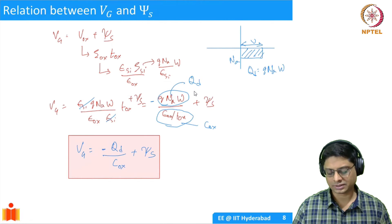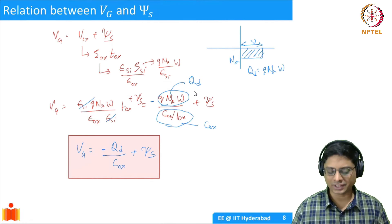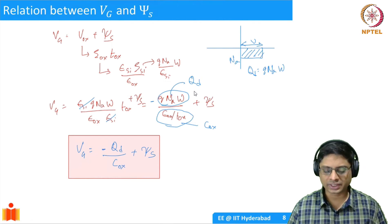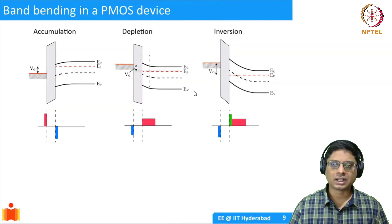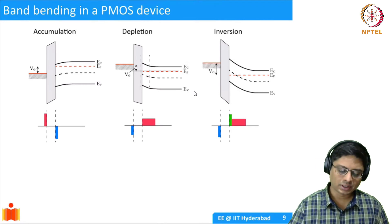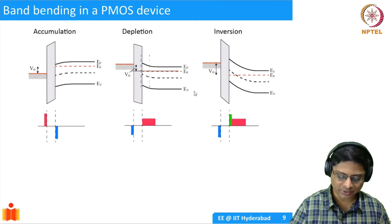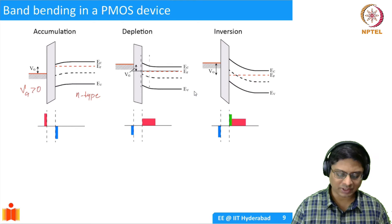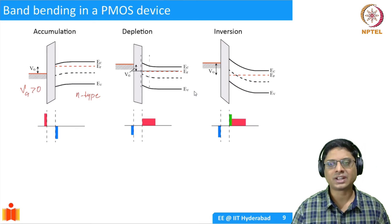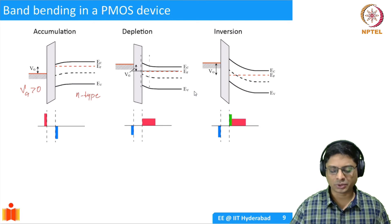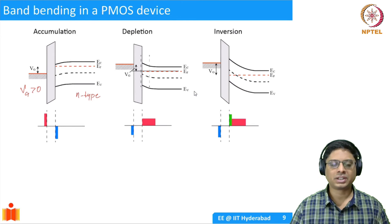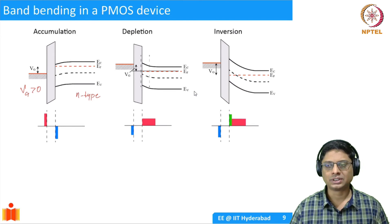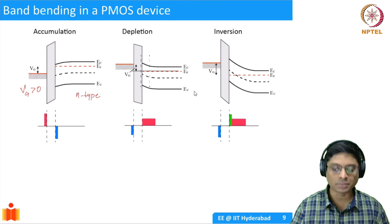In the next class we will do some problems and analyze in more depth. Before I close today, I want to briefly talk about the PMOS device. So far I've discussed only the NMOS device, where we take a p-type substrate. In a PMOS device we have to take an n-type substrate. I'm showing you these diagrams in one shot, but you should definitely draw them yourself and compare with the answer here.